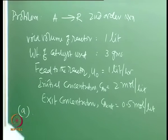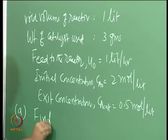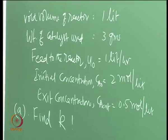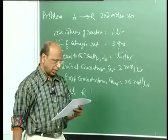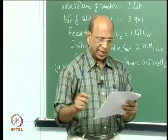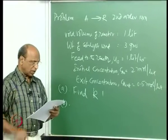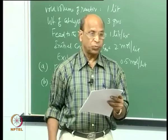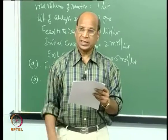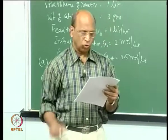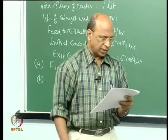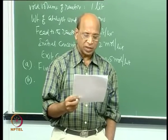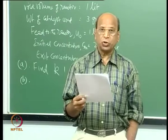Part A: calculate K. Part B: how much catalyst is required in a packed bed reactor for 80% conversion of 250 m³/hour of feed of concentration 1 mole per liter, no recycle is used. Part C: repeat Part B if the reactor is packed with one part catalyst to four parts inert solid - this addition of inerts helps maintain isothermal conditions and reduce possible hot spots.